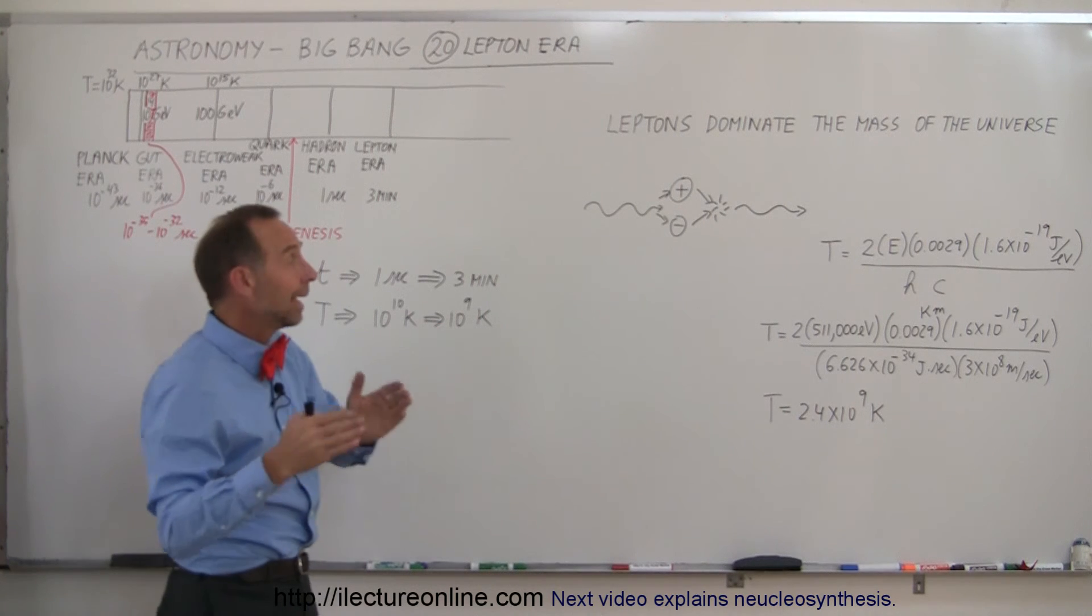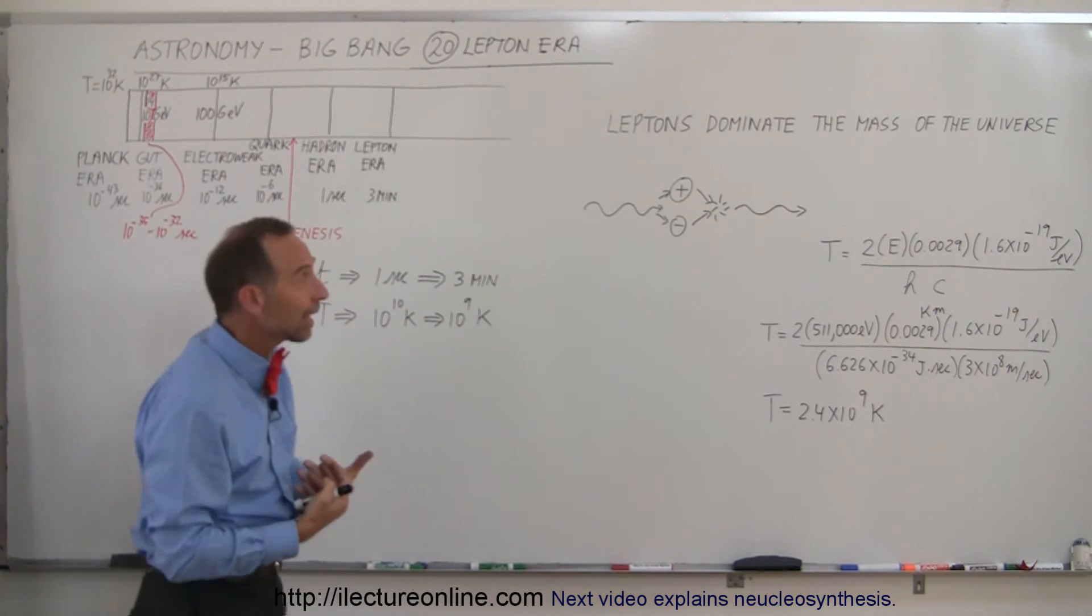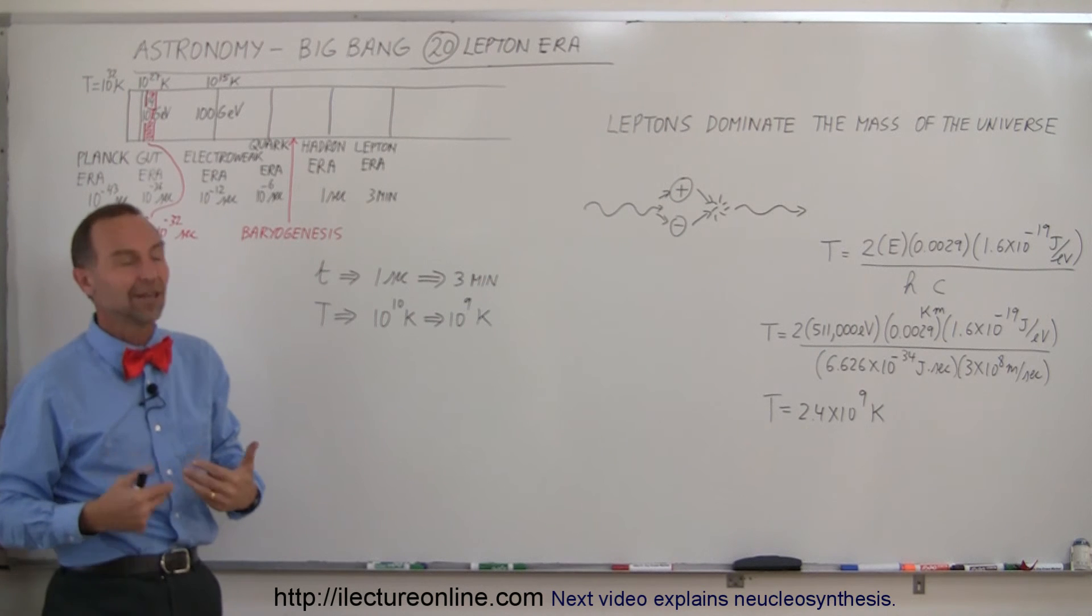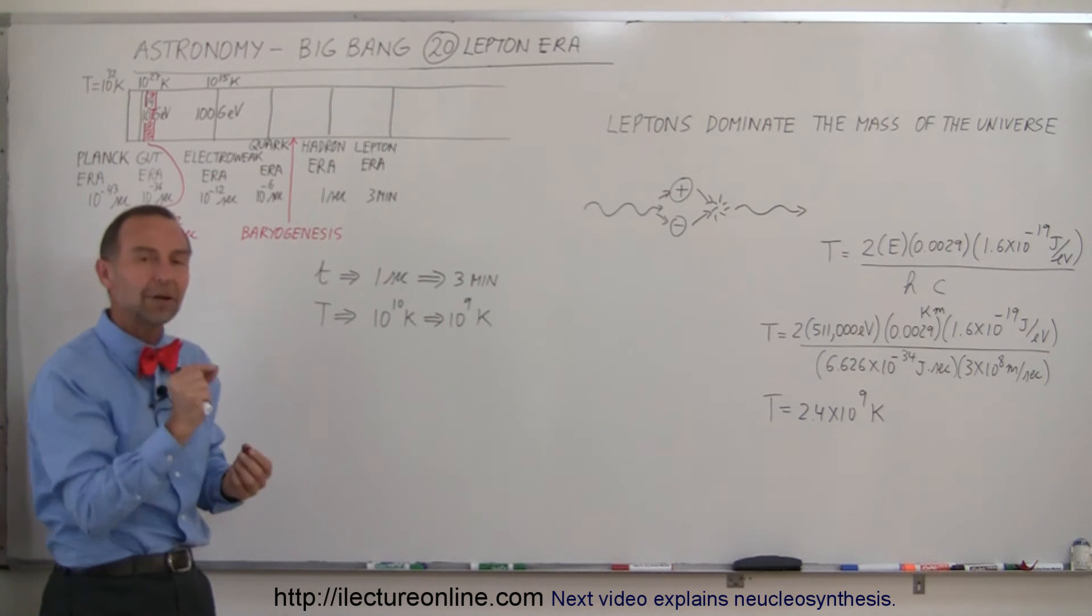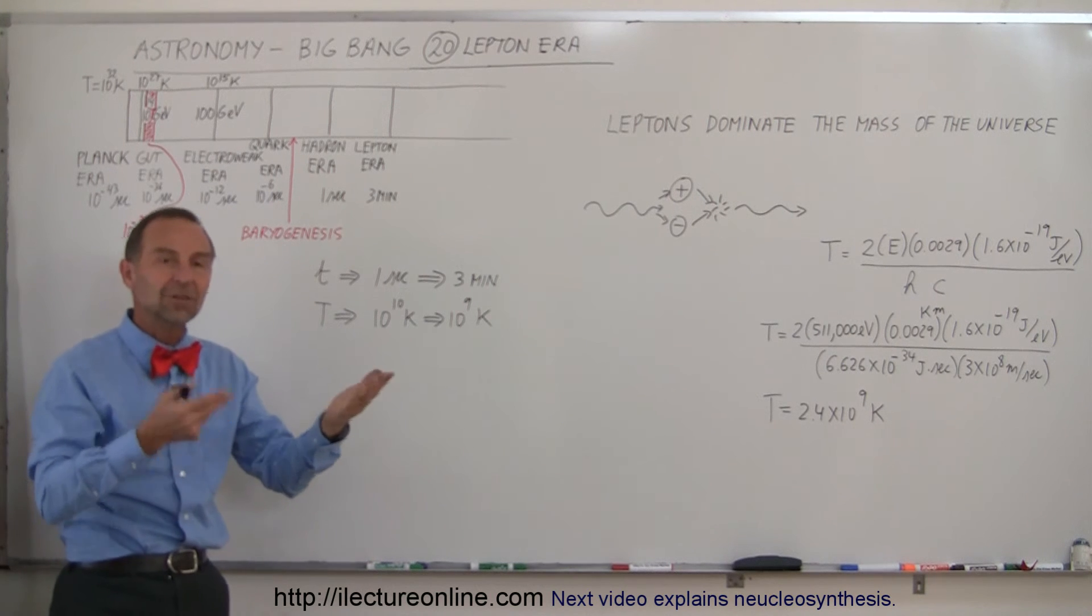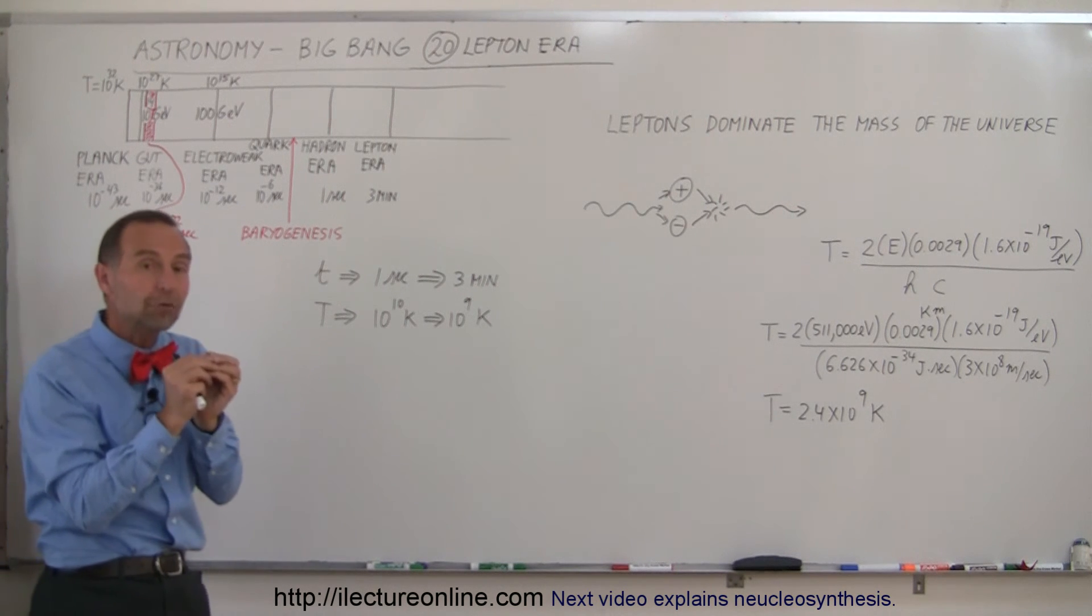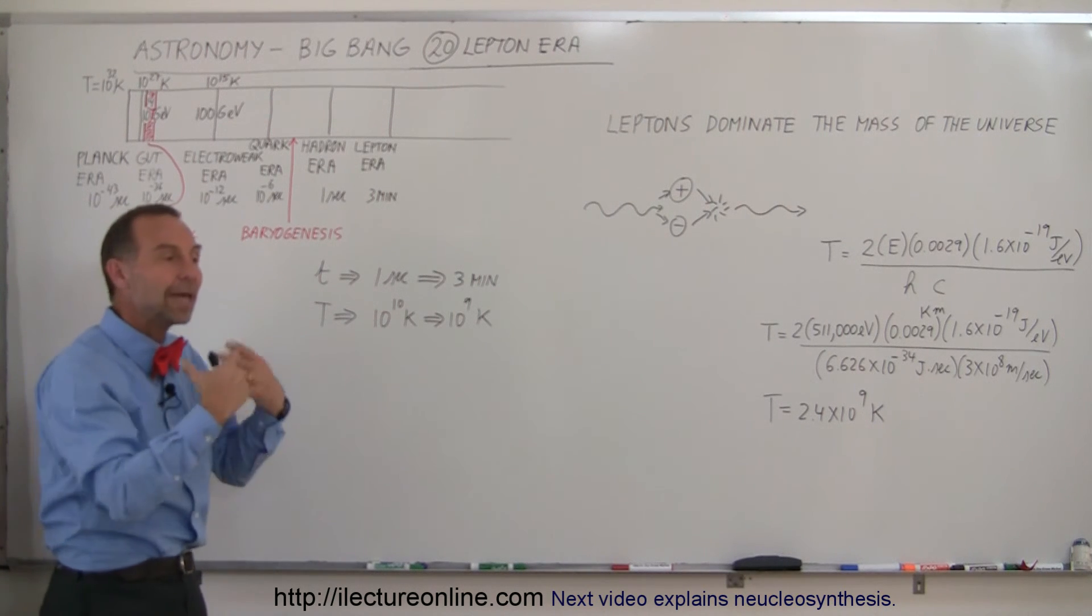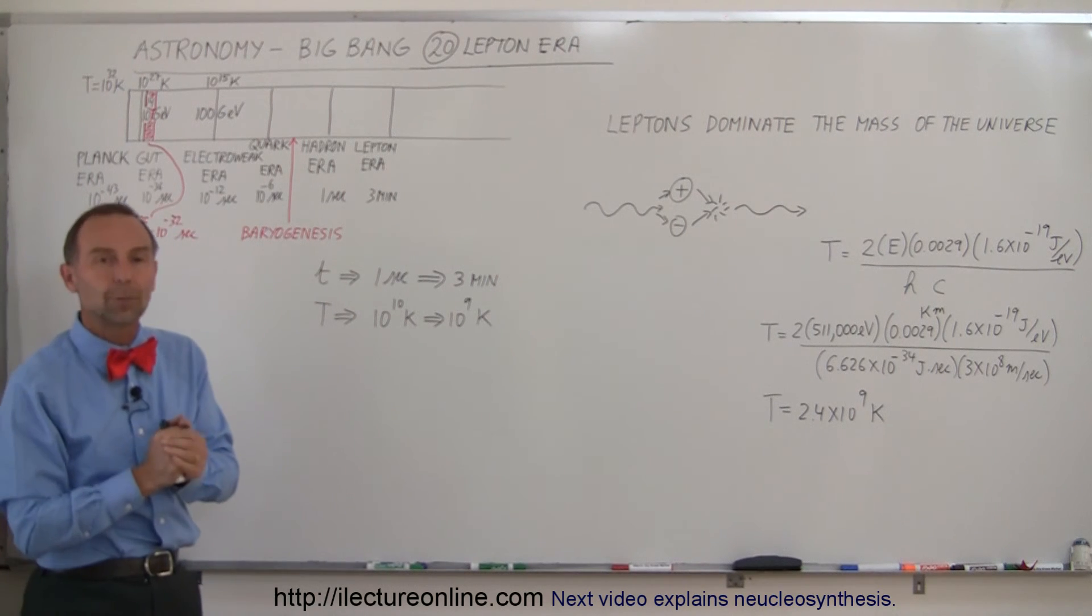And again, according to theory, every particle should have annihilated every anti-particle, every lepton should have annihilated every anti-lepton, and there should be none of them left. Of course, today we know that's not the case. There's lots of electrons in the universe, and again, for some reason, there was a small disparity between the particles and anti-particles, or leptons and anti-leptons, and so there was a small leftover, enough to fill the universe with the required electrons needed to make matter, to make atoms that have protons and nucleus and electrons in the orbits around it.